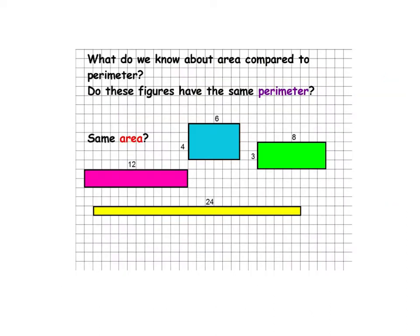So what do we know about area compared to perimeter? If we're bringing area in now, we remember that area is typically length times width. And differently, our perimeter is just like we talked about before — we've got two of the same lengths that we're adding to two of the same widths.